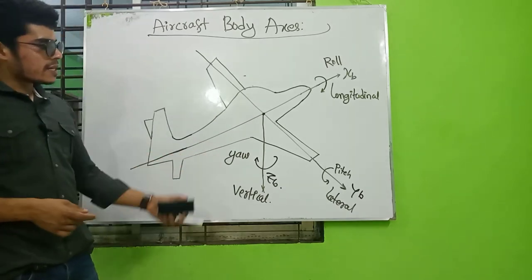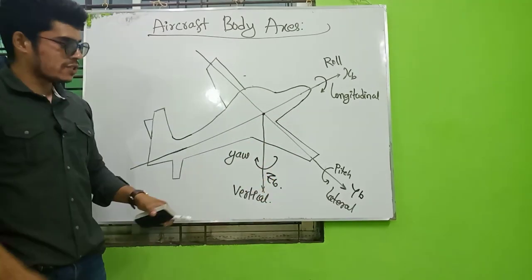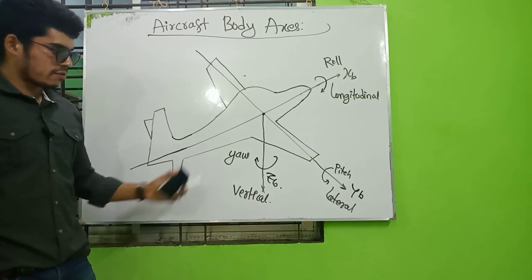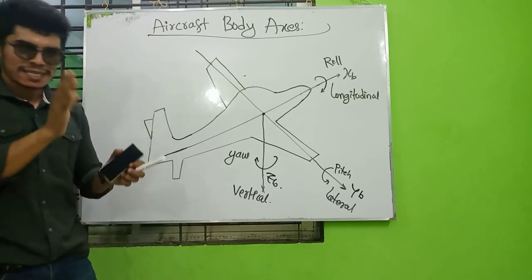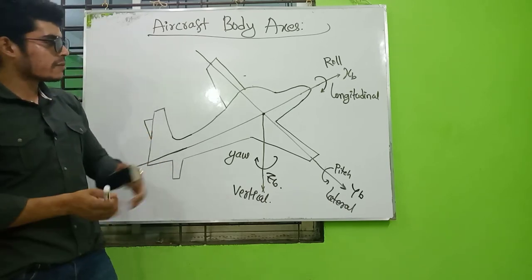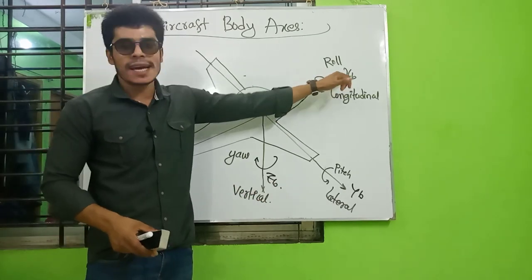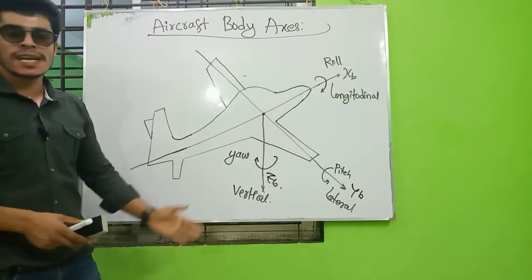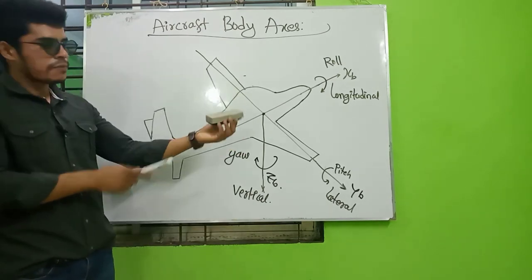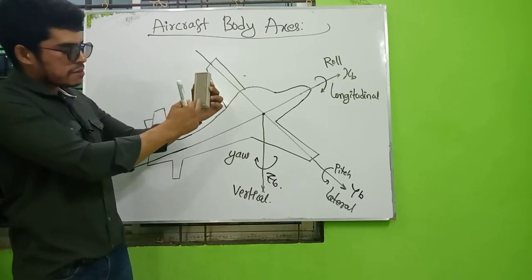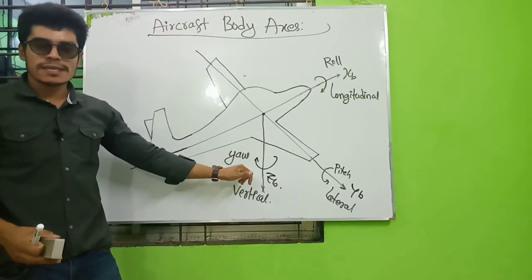This is the longitudinal axis, the lateral axis, and the vertical axis. The plane is defined by the ZB axis and XB axis — this is the symmetrical plane. You can see the aircraft divided by the same symmetrical axis, the XB axis and the ZB axis.